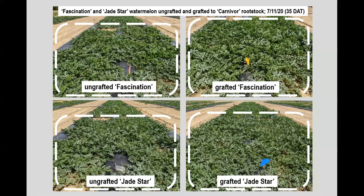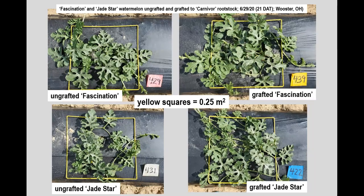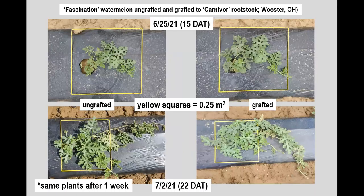For additional visual context, these are views of grafted and non-grafted Fascination and Jade Star plots, in this case taken in 2020, and individual Fascination and Jade Star plants photographed from above after transplanting in 2020 — just a visual reference for the condition of the plants and plots at different points in time, also here in 2021.